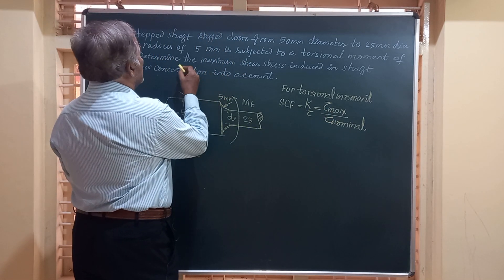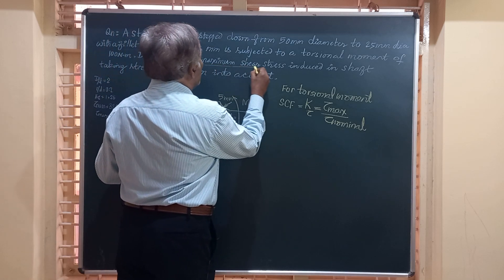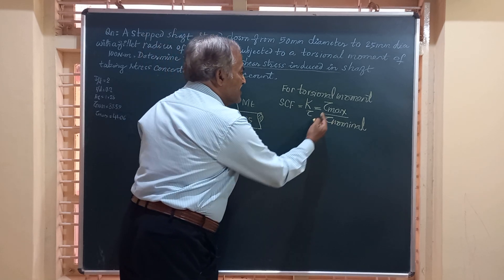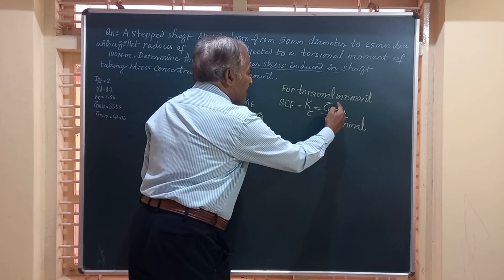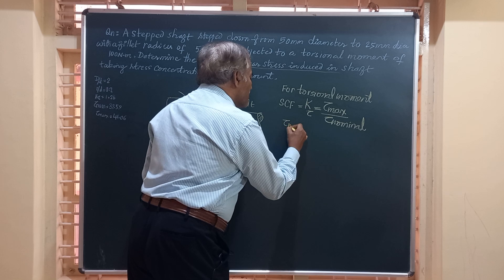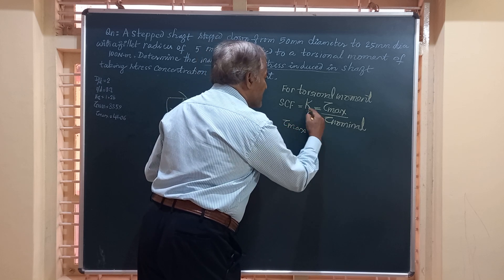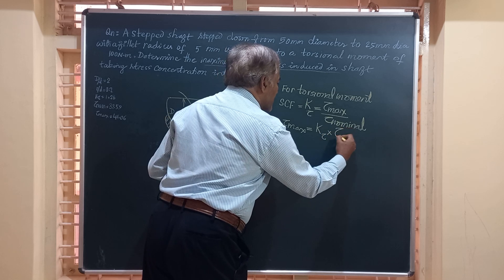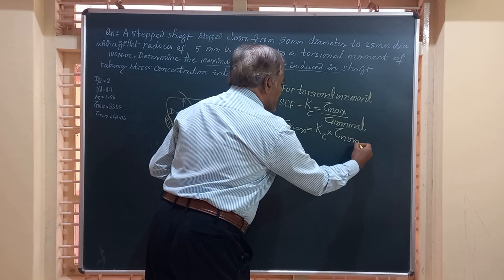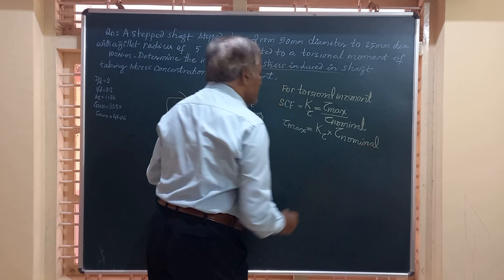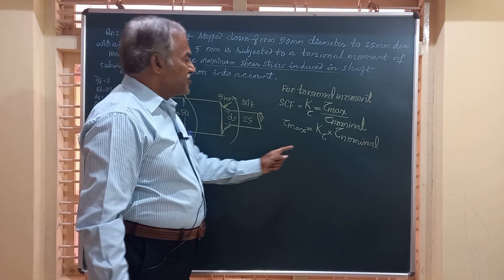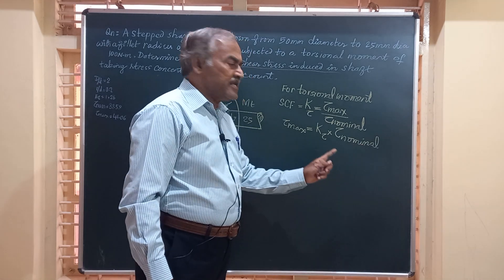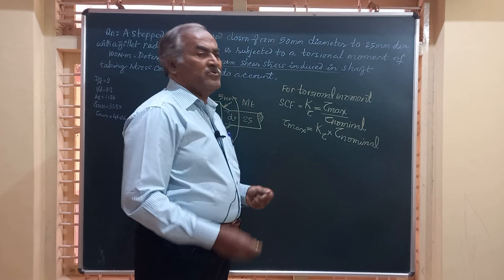In the question, we have been asked to determine the maximum shear stress induced in the shaft. So we have written the formula: tau_max is given by the product K_tau multiplied by tau_nominal. For the given data, we should calculate K_tau and also tau_nominal, multiply those two, and we get the answer.